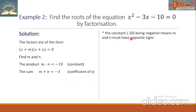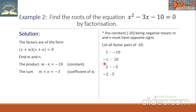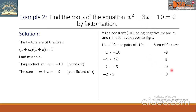Since the constant -10 is negative, m and n must have opposite signs. Listing all factor pairs of -10: 1 × (-10), (-1) × 10, 2 × (-5), (-2) × 5. The sums of these pairs are -9, 9, -3, and 3 respectively. In the sum column we look for the coefficient of x, which is -3, and it appears there.